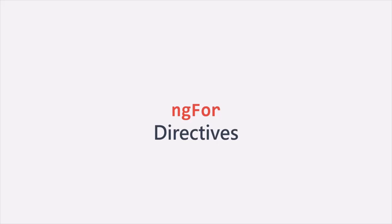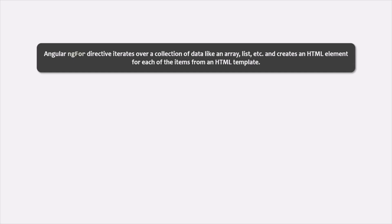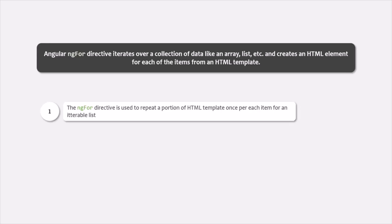Let's start learning about directives in Angular with a built-in directive called ng4. In this lecture, we will learn what is the use of ng4 directive with some use cases. The Angular ng4 directive iterates over a collection of data, for example an array or a list, and then creates an HTML element for each of the items from an HTML template. The ng4 directive is used to repeat a portion of HTML template once per each item for an iterable list.